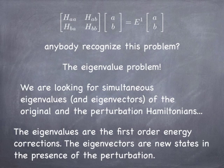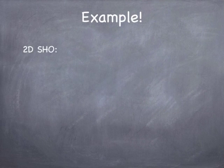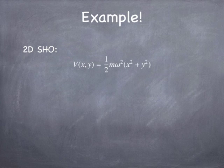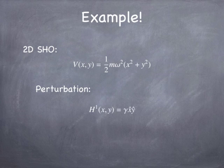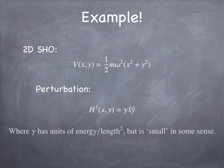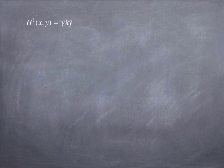Let's do a concrete example. Imagine we have a two-dimensional simple harmonic oscillator with a potential you all know, and we throw in a perturbation that messes it up. This particular perturbation is the product x times y, which you can generate by adding an electric field that solves Laplace's equation. Gamma is a number with units of energy divided by length squared, and it's small compared to the typical energies in the SHO — small compared to ℏω.